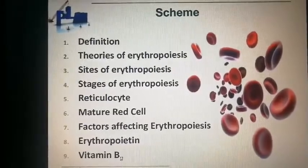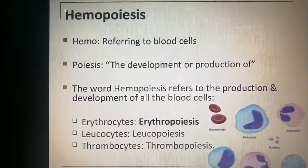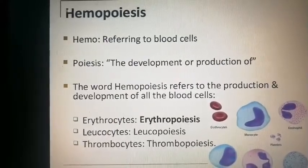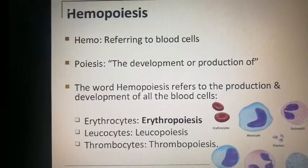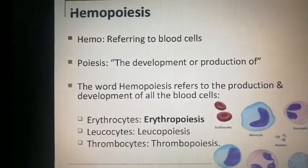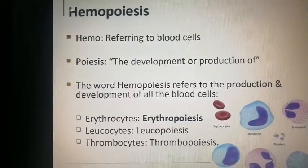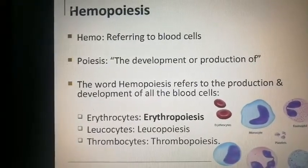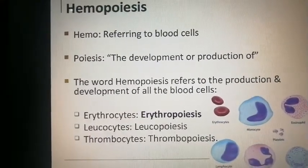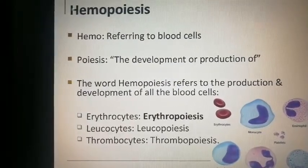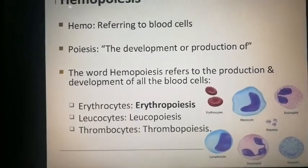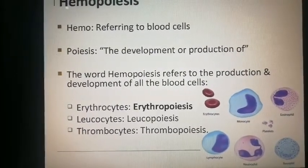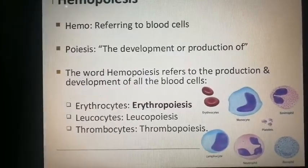Hemopoiesis — 'hemo' referring to blood cells and 'poiesis' meaning development or production — refers to the production and development of all blood cells. Erythropoiesis is specifically for the formation of erythrocytes, while for leukocytes there is leukopoiesis, and for thrombocytes there is thrombopoiesis. You can see here different types of blood cells: erythrocytes, monocytes, eosinophils, platelets, lymphocytes, neutrophils, and basophils.